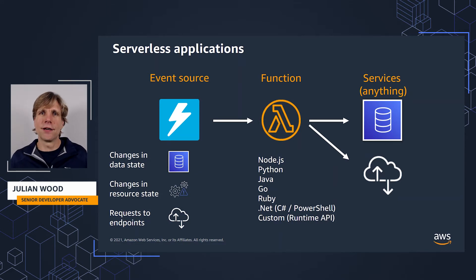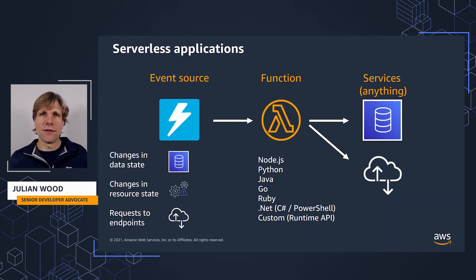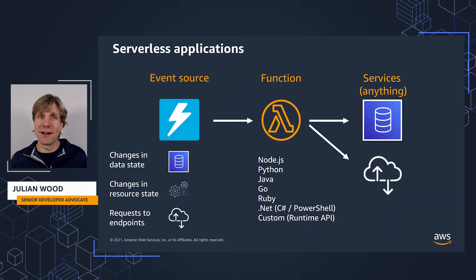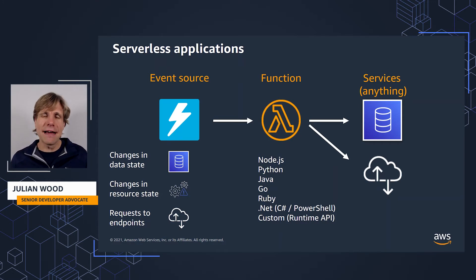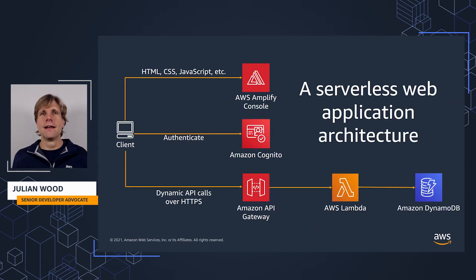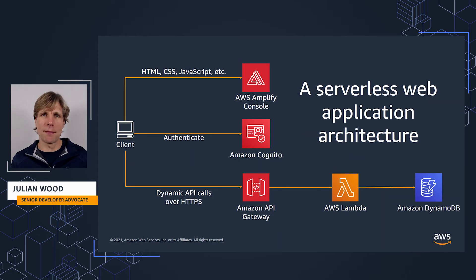The function can send its output to another service, preferably serverless. Lambda is a compute service, so it itself is running on top of underlying compute resources. Yes, there are servers in serverless, but you don't have to think about them. You don't have to manage or scale them. This is a basic architecture diagram for a small serverless web application.